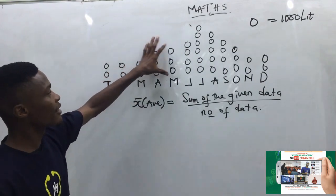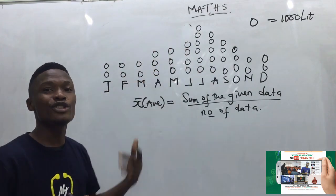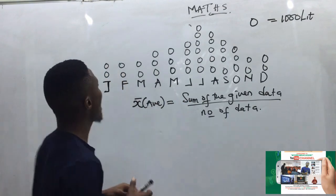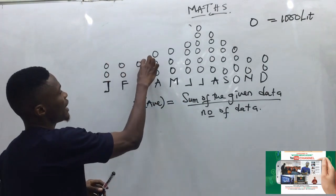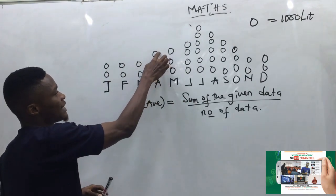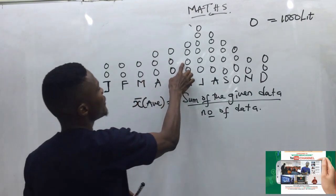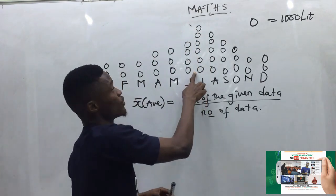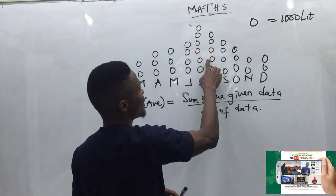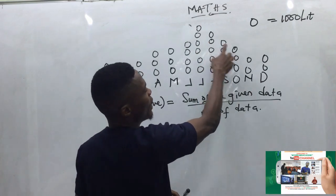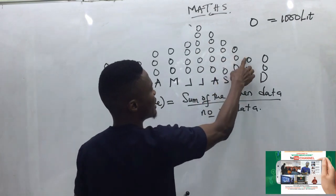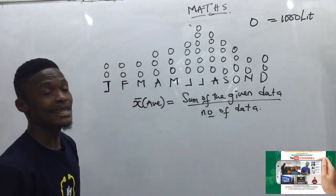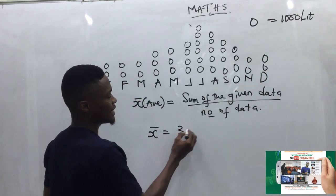I count the number of circles across all months and get a total of 38 circles.